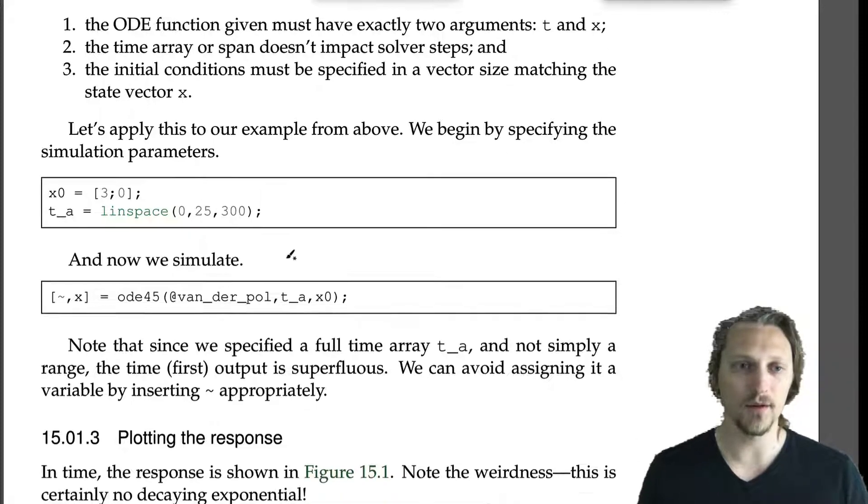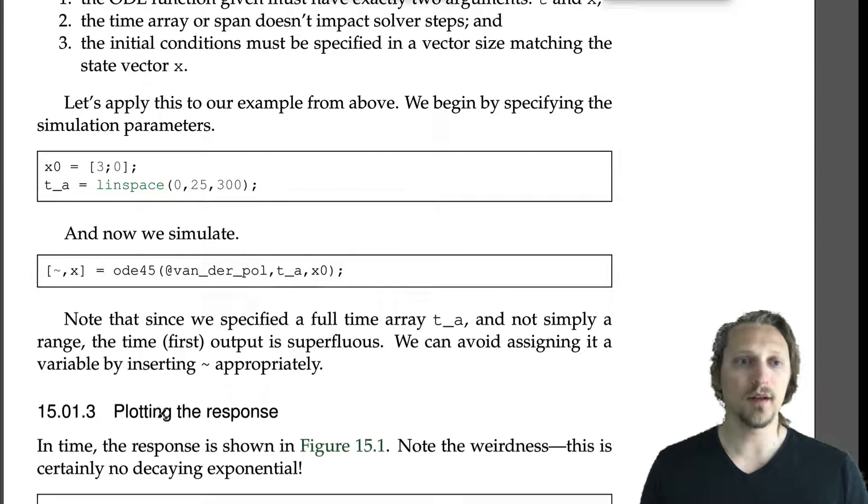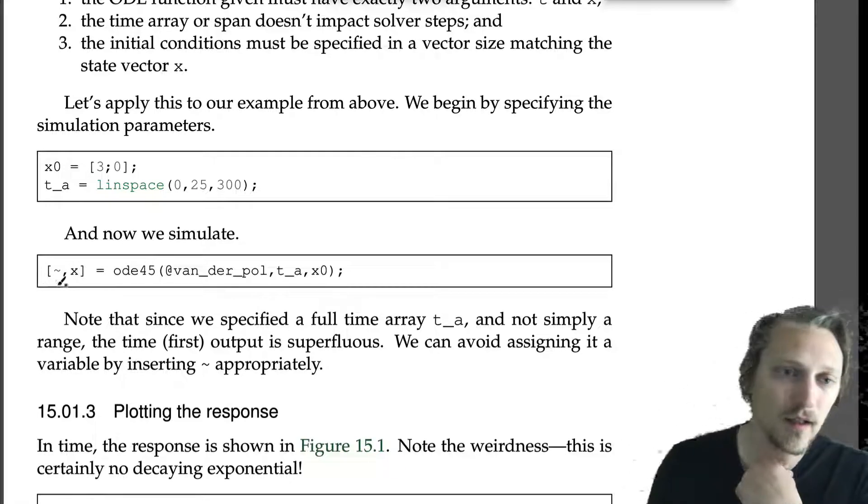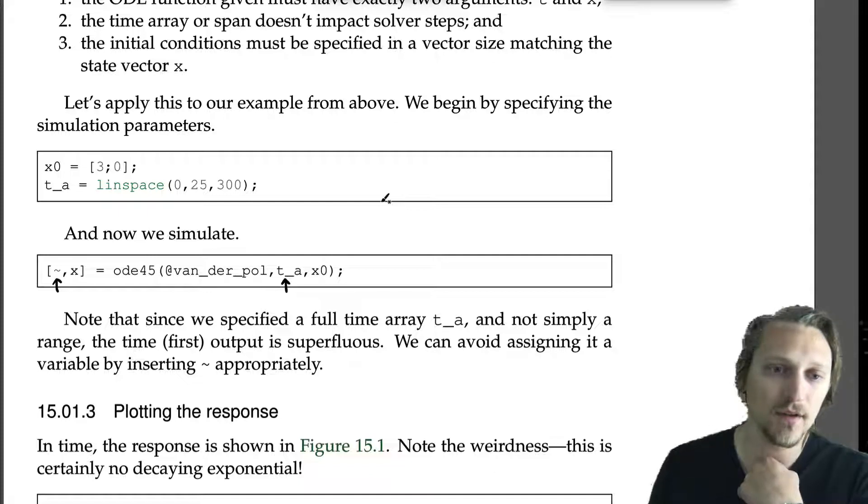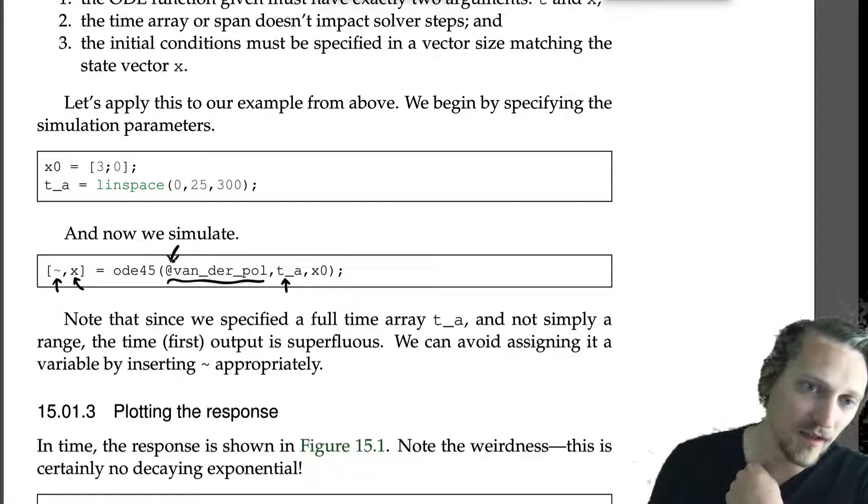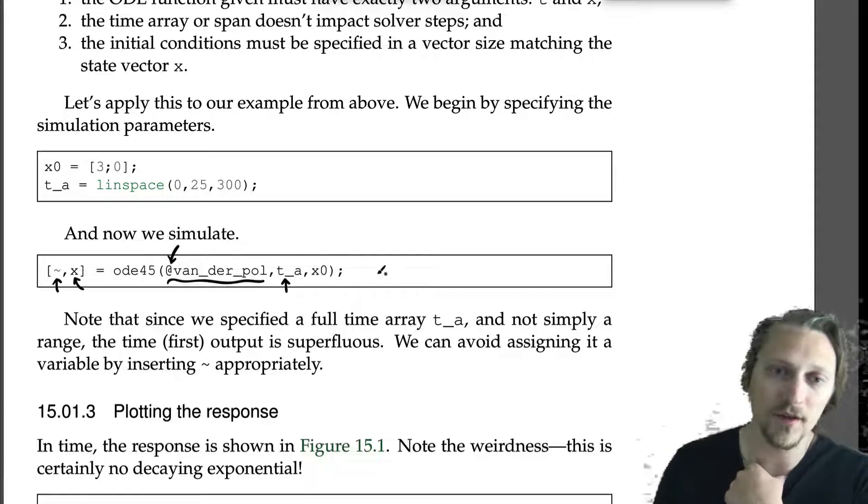So we have x₀, the initial conditions being [3, 0]. We have two state variables; we specify that the first state variable x₁ will be started out at 3, and the second state variable x₂ will start out at 0. We'll have a linspace construction of the time array from 0 to 25 seconds. We'll take 300 values. And now we simulate.